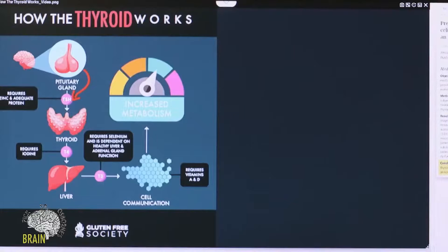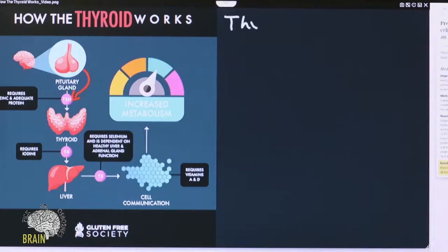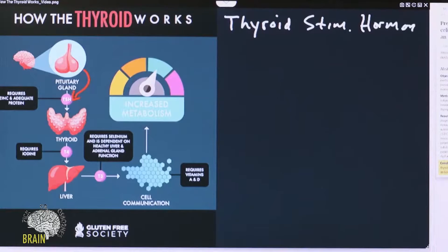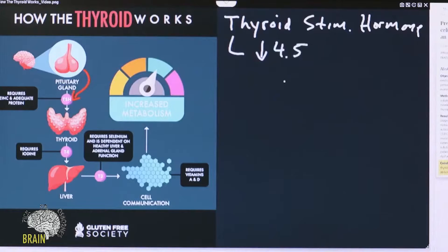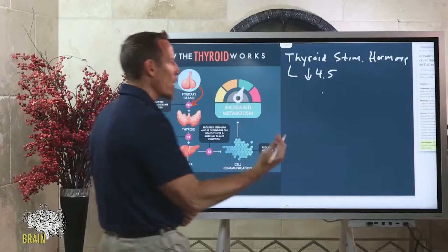Those of you who have ever gone to your doctor — oftentimes what doctors measure is TSH, which stands for thyroid stimulating hormone. Usually they'll tell you your range for TSH needs to be less than 4.5, generally speaking.